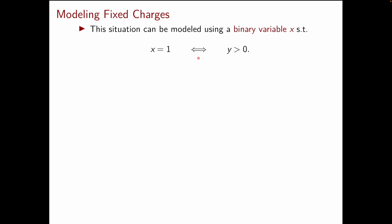Let's say that x is equal to one if and only if y is strictly positive. If we could encode this if and only if condition then the cost of variable y can be written as cx plus hy.